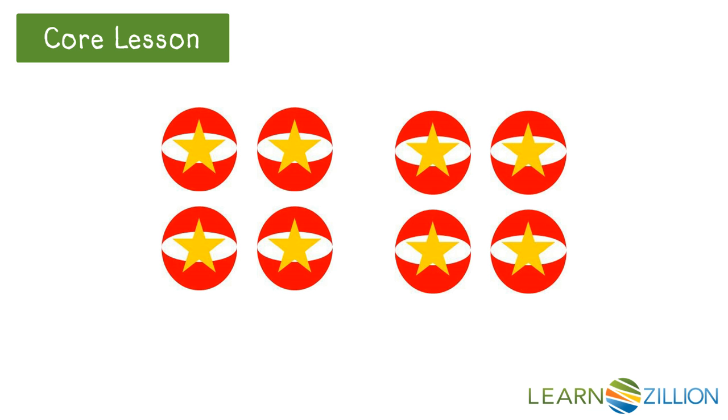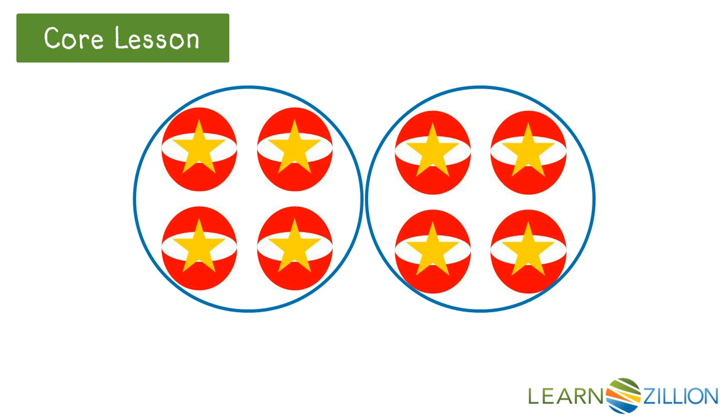Here we have eight balls. Because 8 is an even number, the balls can be divided into two equal groups. The equation for these balls is 4 plus 4 equals 8. We have four balls in each group, so the add-ins are 4. The sum is 8 because we have eight balls all together.